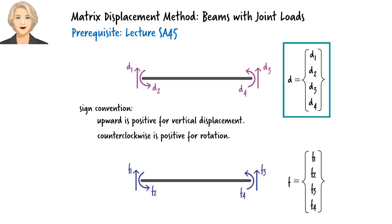This is called member displacement vector. And this is called member force vector. We know that force and displacement are related to each other. But what is that relationship? And how do we write it mathematically?